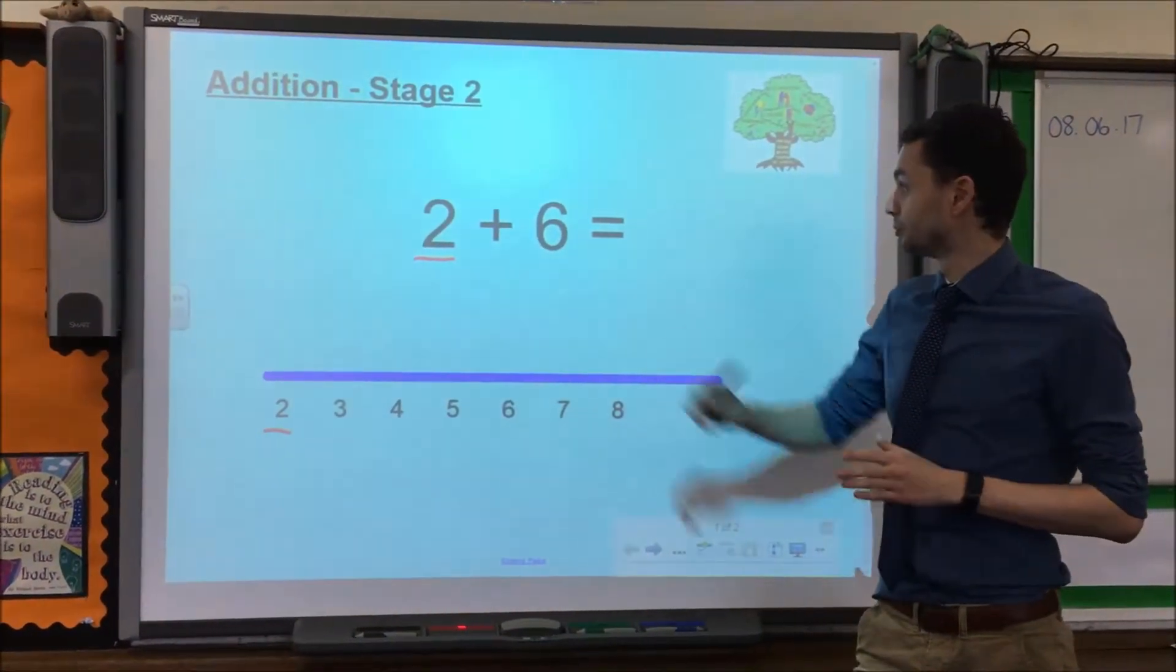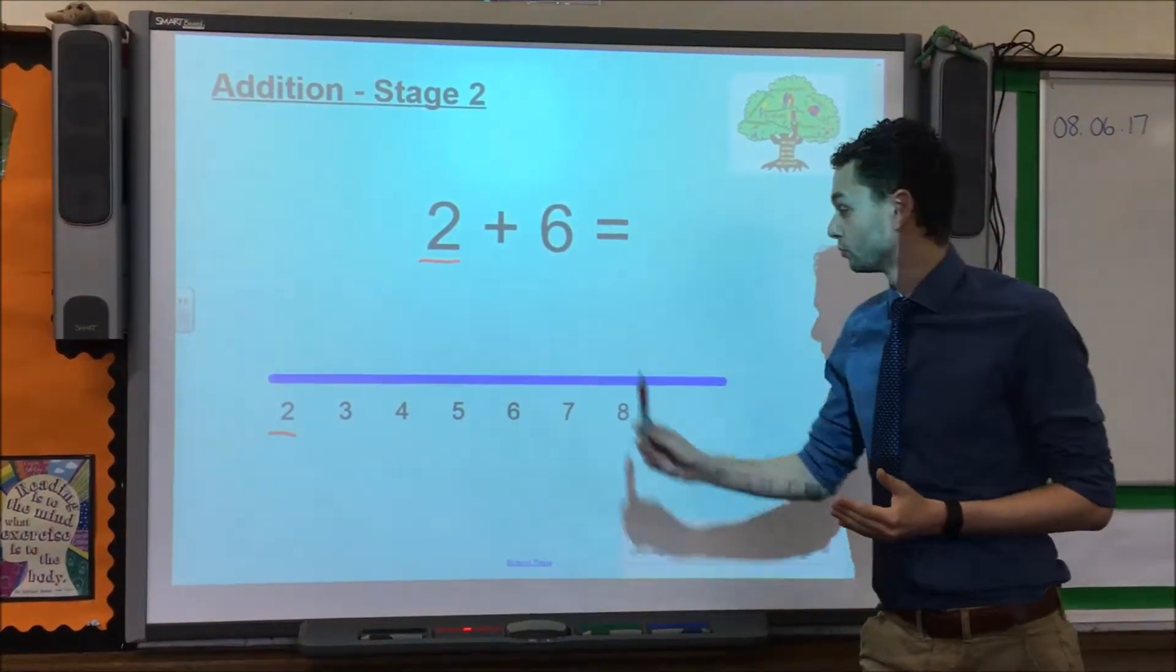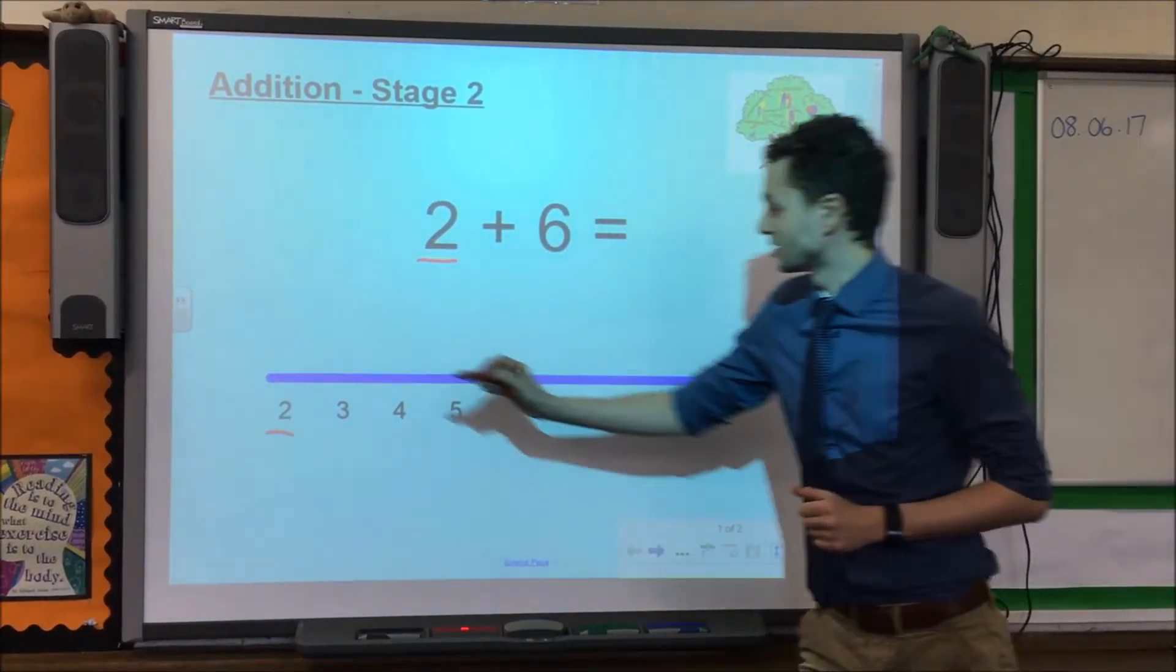Then we look at the second number, we are adding 6. That means we need to make 6 jumps from the number 2, like this.